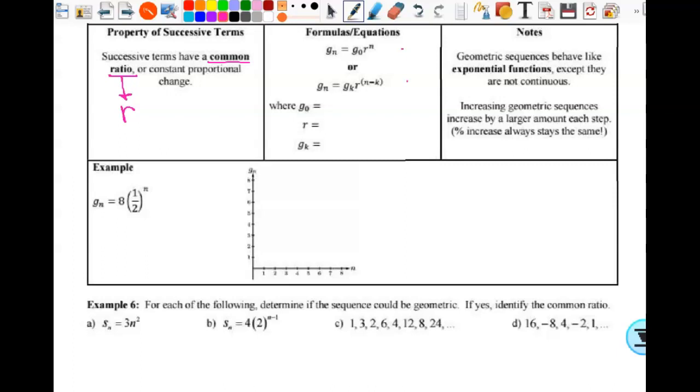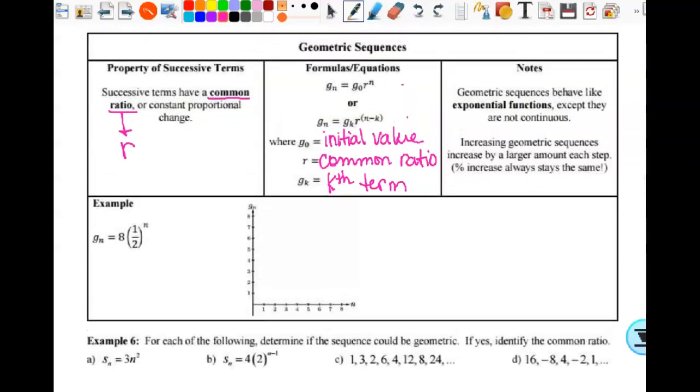So g sub zero, we have g instead of a, this is the initial value. R is the common ratio. And g sub k is the k-th term. Arithmetic sequences behave like a linear function. Geometric sequences behave like exponential functions, but they are not continuous. We can either have exponential increase or decrease. We're not connecting the dots.